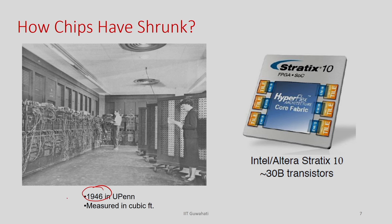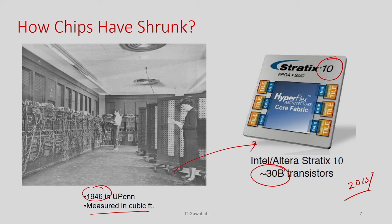Looking at the evolution of electronic systems, the first transistor came in the 1960s — about 60 years ago. In those 60 years there has been a huge revolution. In 1946, before transistors, there was an electronic system that occupied an entire room. Whereas we now have the Xilinx FPGA board from around 2015–2016, which has 30 billion transistors and is small enough to hold in your hand. That is the kind of evolution enabled by MOS transistors.